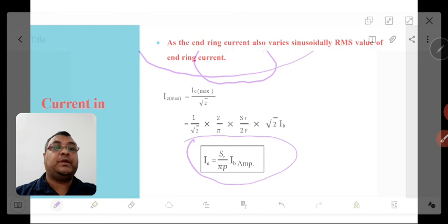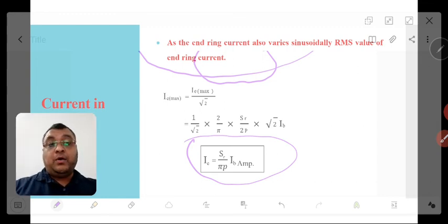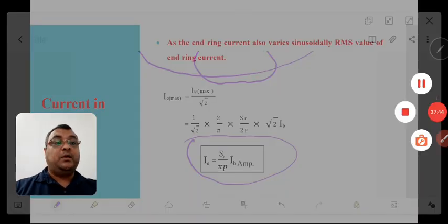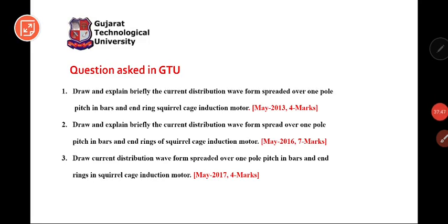Now let's see how this question is asked in the GTU examination. The question is: 'Draw and explain briefly the current distribution waveform spread over one pole pitch in bars and end rings.' In the exam, you have to mention these equations and all the figures shown in this video lecture. I hope you can give a good answer after learning from this lecture. Thank you very much.